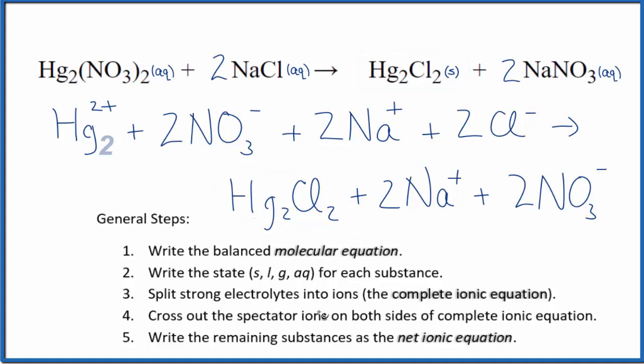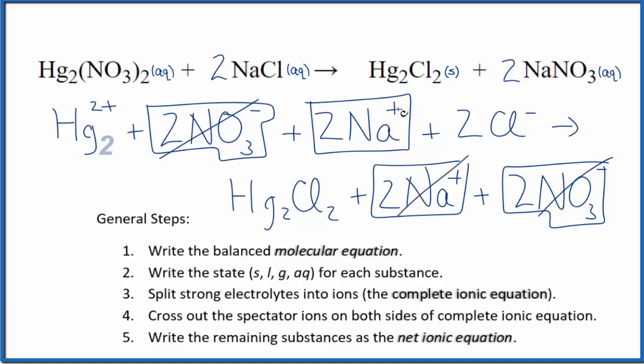At this point, we can cross out spectator ions. They're on both sides of that complete ionic equation. In the reactants here, I have two nitrate ions and in the products. So I can cross those out. They're spectator ions. Two sodium ions in the reactants and then again in the product, spectator ions, they're gone. What's left, that's the net ionic equation for this mercury one nitrate and the sodium chloride.